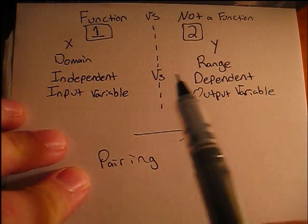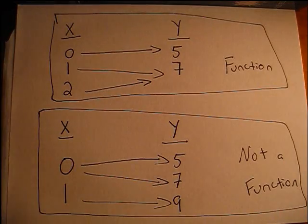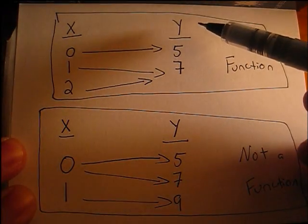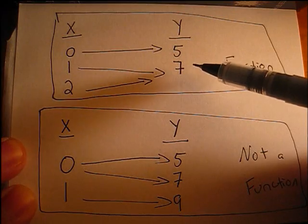So is a pairing from group 1 to group 2 a function? Here we have in the x group 0, 1, and 2, while in the y group we have 5 and 7.